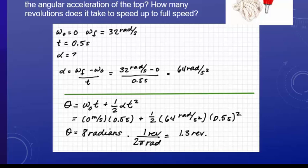The question asked for revolutions, so we have to convert it back to revolutions. Remember, in one revolution you go around two pi radians. You do the math there and end up with 1.3 revolutions to speed up to full speed.